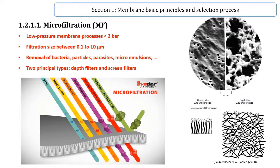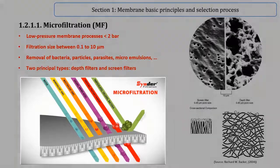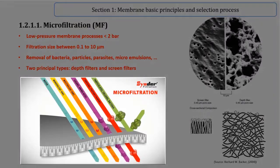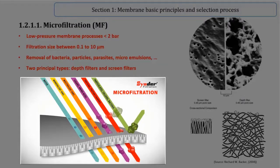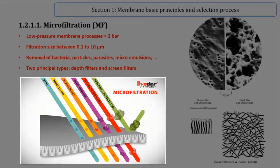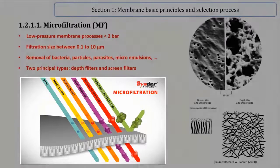As you can see in this animation, microfiltration membranes are capable of separating large suspended solids such as colloid particles, fat, and bacteria, while allowing sugars, proteins, cells, and low molecular weight organic compounds to pass through the membrane.